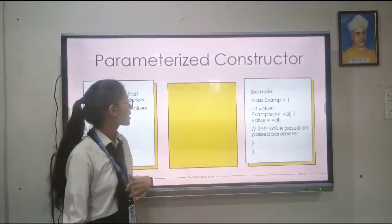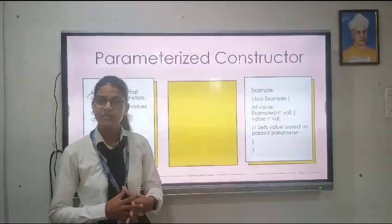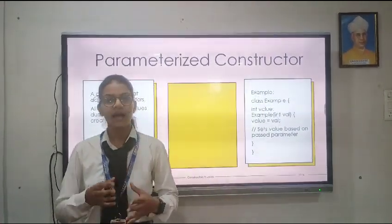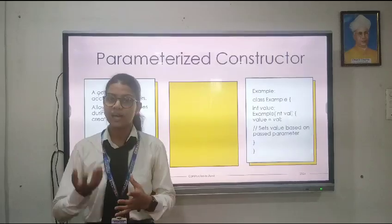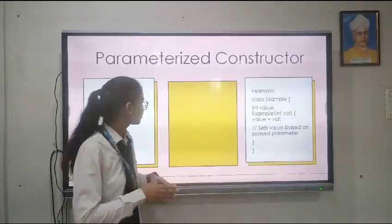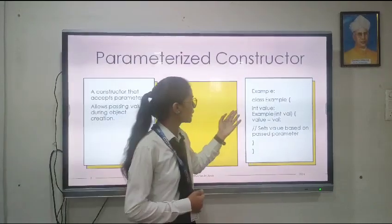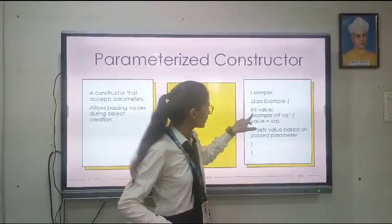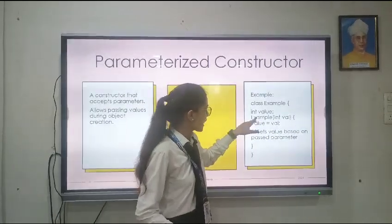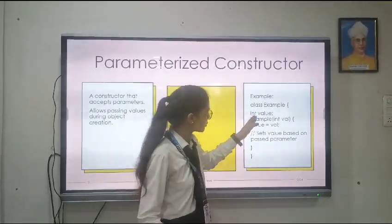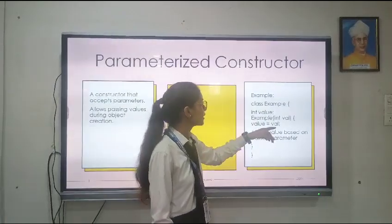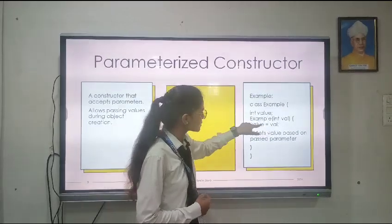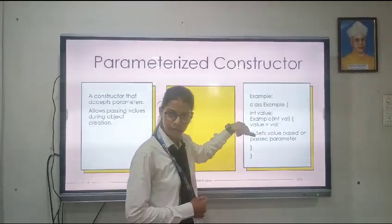Moving to the parameterized constructor. Parameterized constructor is a type of constructor which has parameters and we pass arguments into it. For example, here is a class named Example with a variable named value. Through the parameterized constructor we are assigning a value which is passed in the parameter, and that value is being assigned to the value variable.